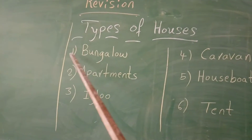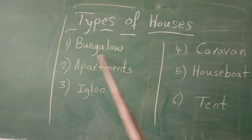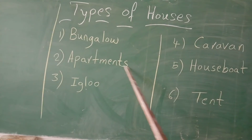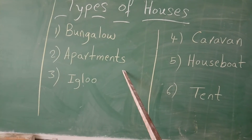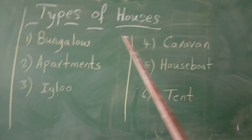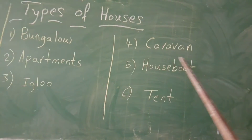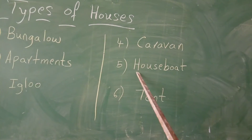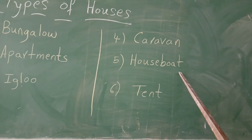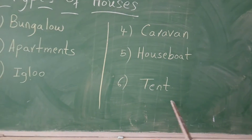What is the spelling of bungalow? B-U-N-G-A-L-O-W. Bungalow. Apartments — A-P-A-R-T-M-E-N-T-S. Igloo — E-G-L-O-O. Karwan — C-A-R-A-V-A-N. Houseboat — H-O-U-S-C-B-O-A-T. Tank — T-E-N-T.